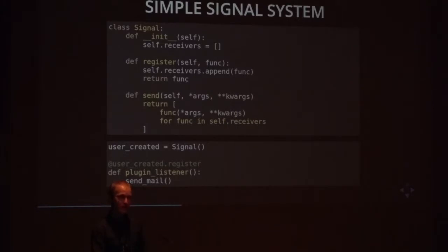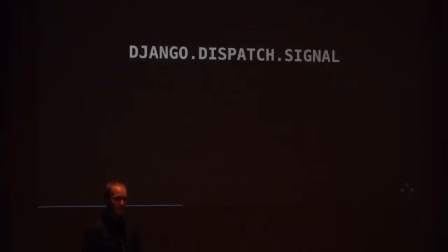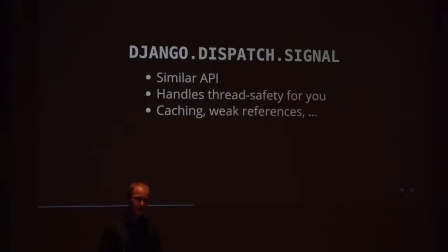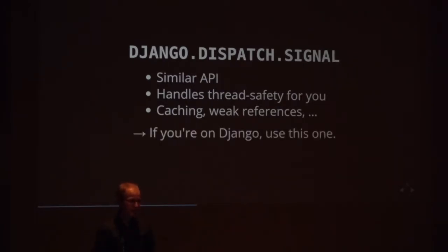If you're on Django, I highly recommend you not use this custom implementation but instead use the Django.dispatch.signal implementation, which has a very similar API but handles some nasty things for you. It's thread safe, it uses caching, and it uses weak references to avoid memory leaks. So if you're on Django, there's no reason not to use the one provided by Django.